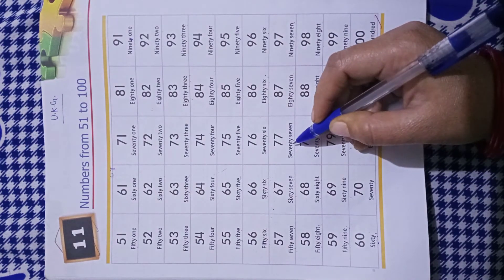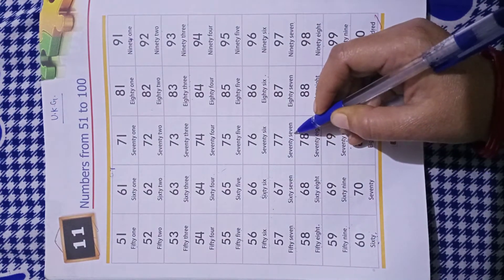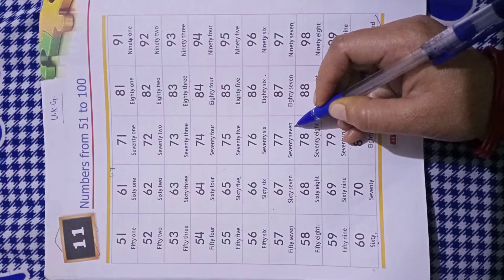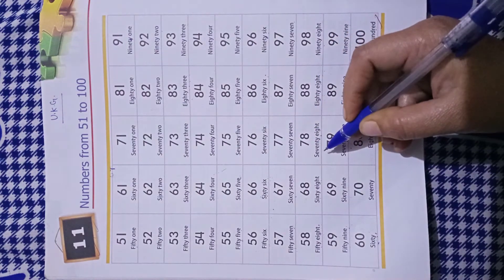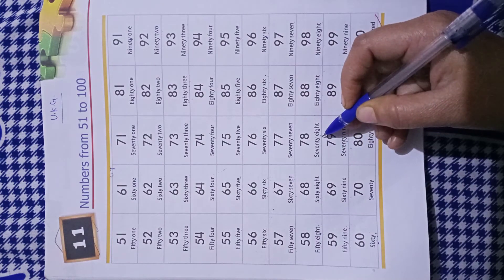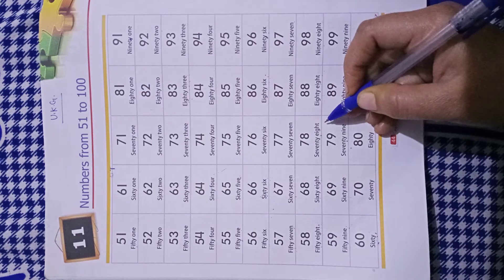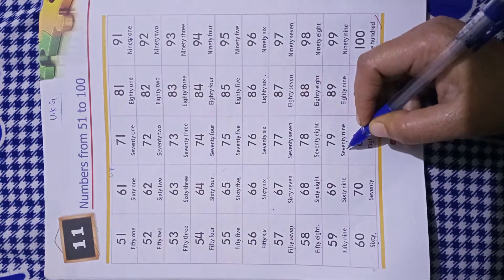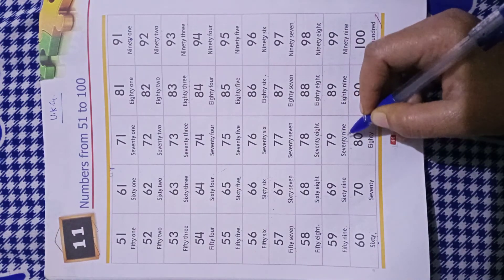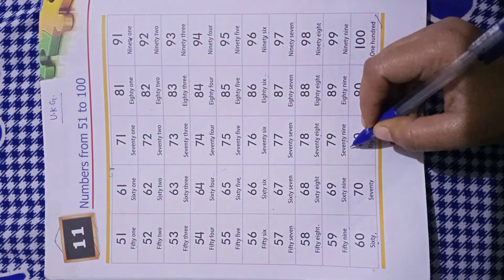SEVENTY-70 SEVEN-7-77, SEVENTY-70 EIGHT-8-78, SEVENTY-70 NINE-9-79.